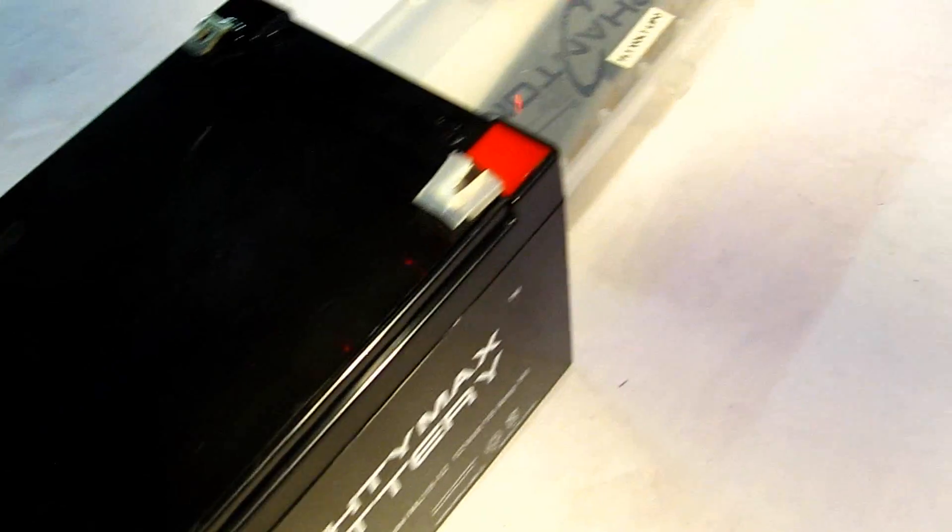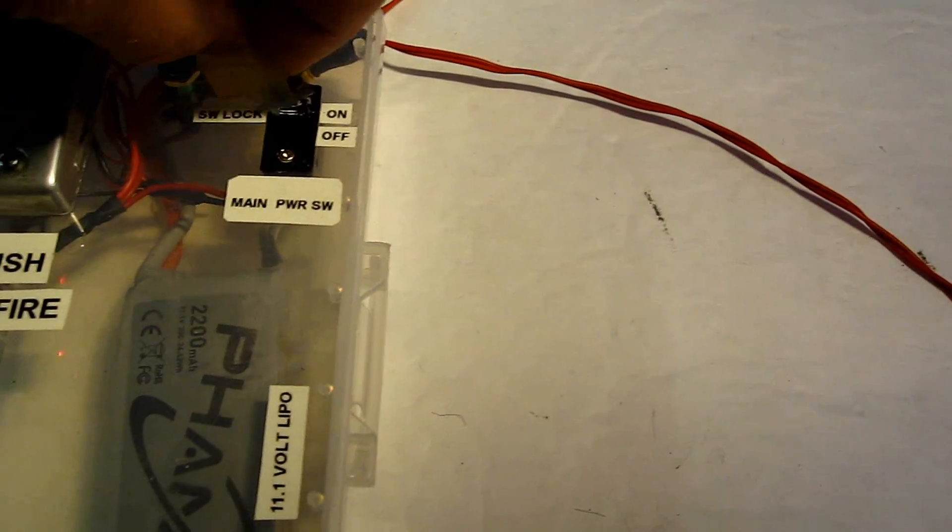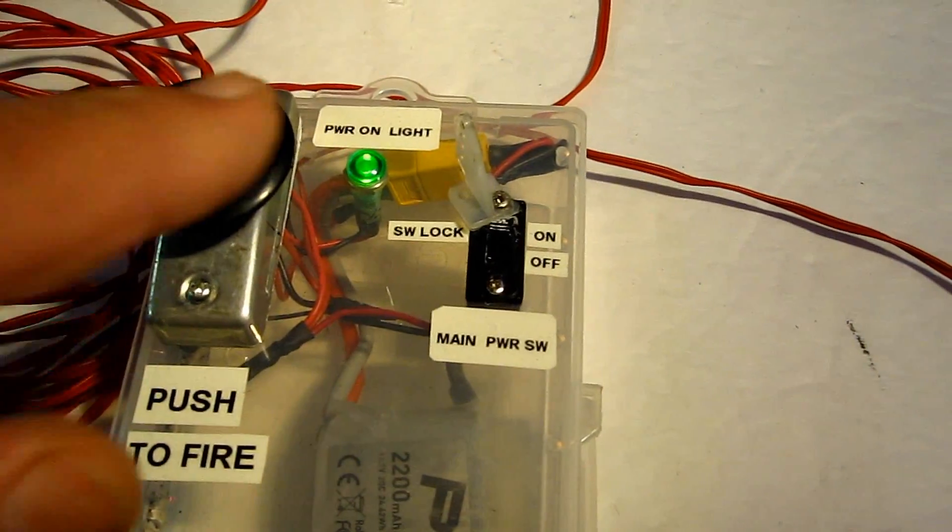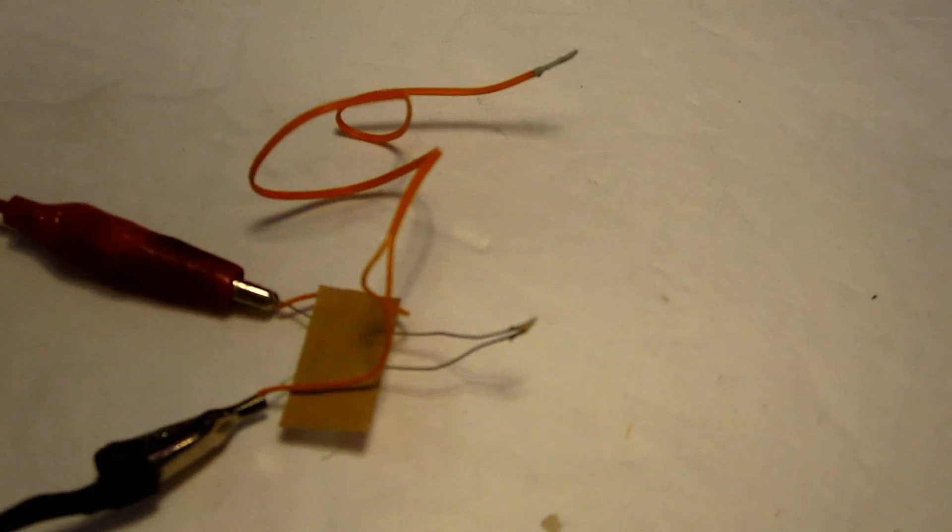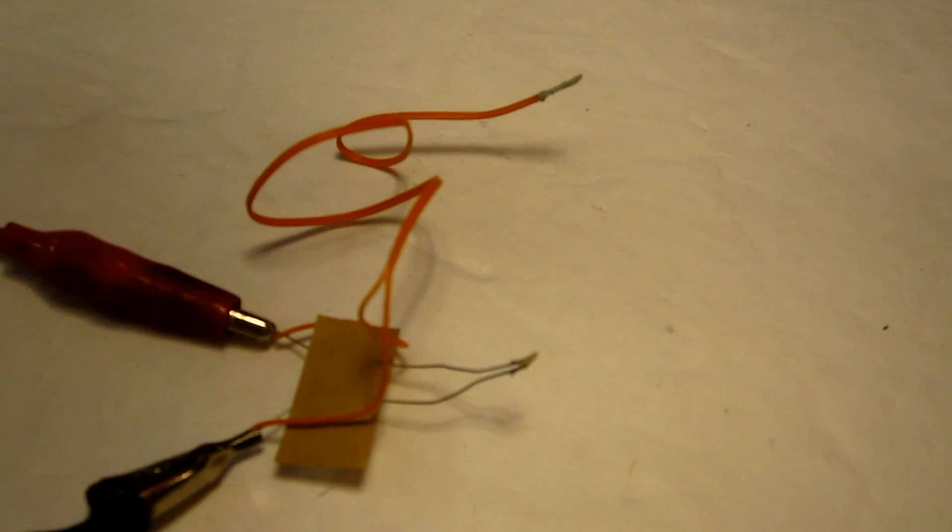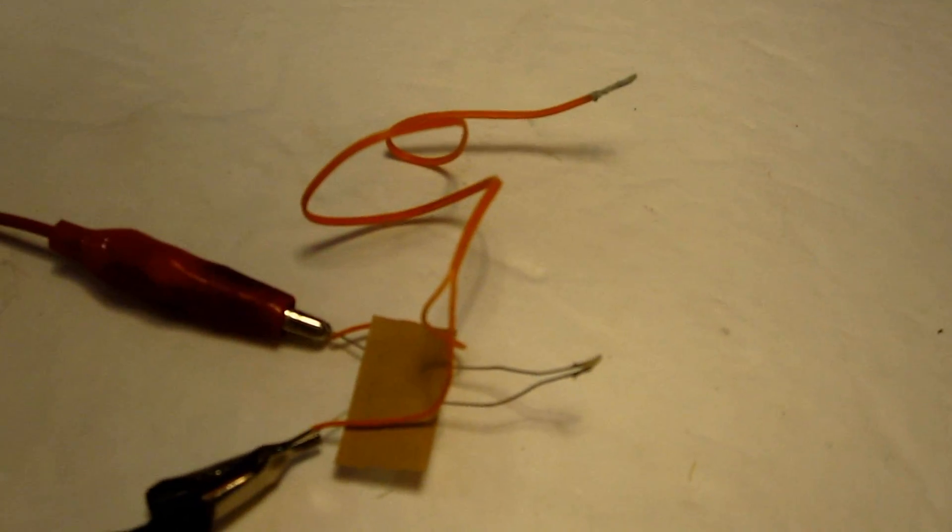I'm going to go ahead and turn the arm switch on and we have a green light. We're going to go over here and I'm going to count this down and fire, and we're going to see which igniter lights first and how it ignites. Three, two, one, fire.